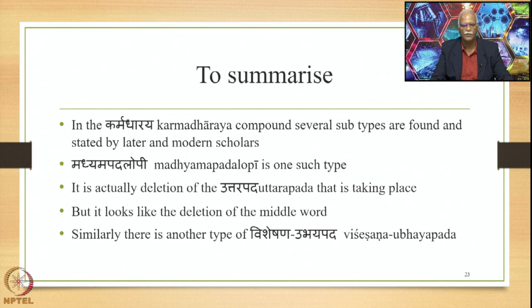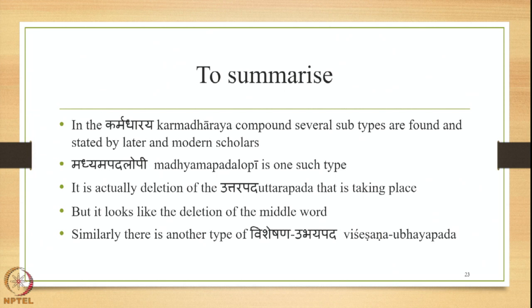To summarize: in the Karmadharaya compound, several subtypes are found and stated by later and modern scholars. Madhyama Padalopi is one such type — it is actually the deletion of the Uttarapada that is taking place, but it looks like the deletion of the middle word, which is why some texts call it Madhyama Padalopi. Similarly, there is another type Visayashana Ubhaya Padha also stated, and these types need to be studied closely in the light of the Paninian system and the Sutras. We continue to study some other Sutras stating the Karmadharaya compound in the next lecture.